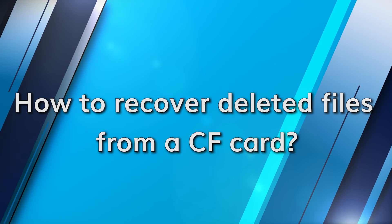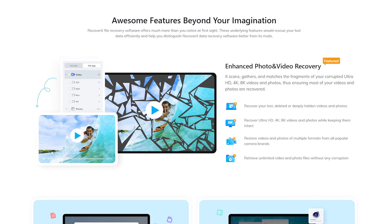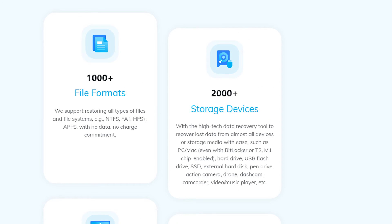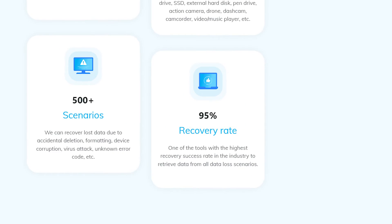If you find there is no way to fix your CF card readability error, you may want to recover the files from it before you lose them forever. Wondershare Recoverit can make this possible — it's an effective and efficient solution for storage devices. Packed with numerous features, it can recover pretty much all file types. It's compatible with over 1,000 different file formats, over 2,000 types of storage devices, and over 500 situations. It offers a 95% recovery rate, which is among the highest in the industry, with enhanced photo and video recovery capabilities, and it lets you preview all your files before you choose to recover them.